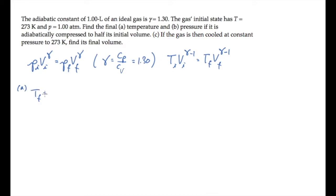The final temperature is the initial temperature times the ratio of volumes to the gamma minus 1. The initial volume is twice the final, so the ratio is 2, and when we calculate we find the final temperature is 336 Kelvin.